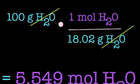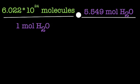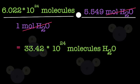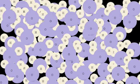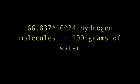Now that we've solved for the moles, we can find the molecules of water. Here comes the easy part. Just multiply that last number with two, and that is the number of hydrogen atoms in a hundred grams of water.